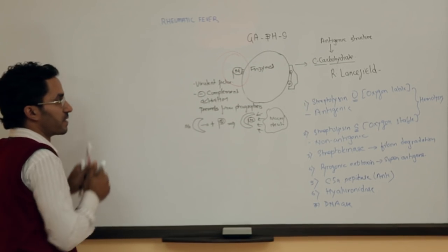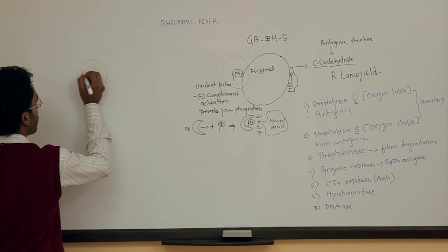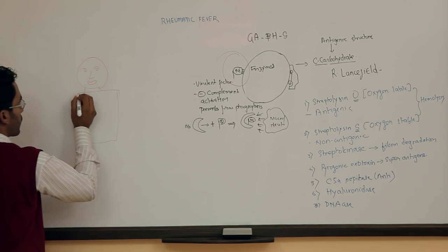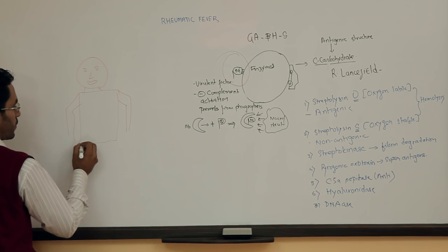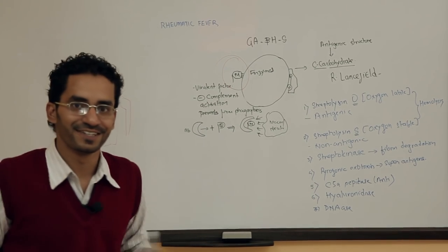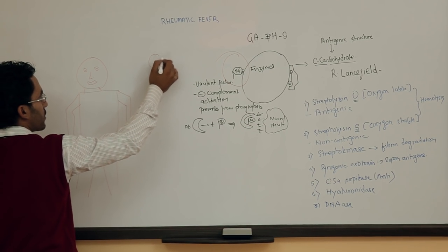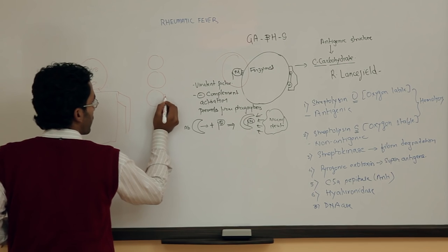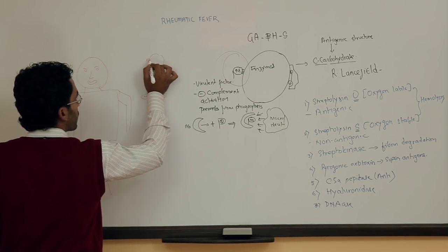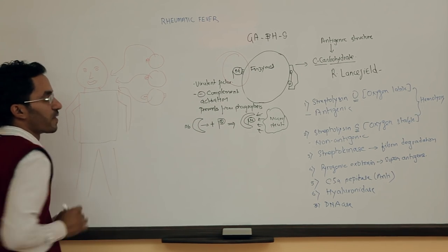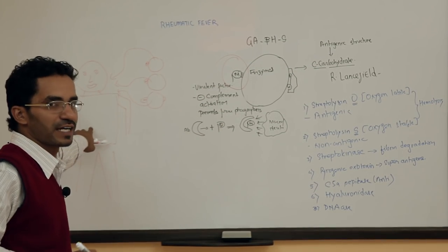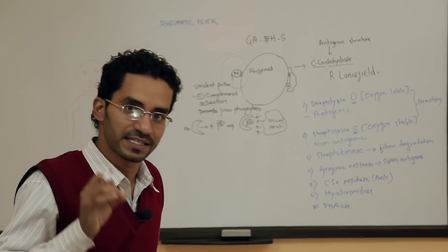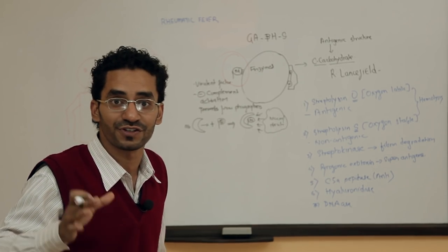In the environment, these streptococci cocci carry M protein and go to attack the human body. The most probable age group affected is 5 to 15 years, as we have studied that rheumatic fever is more common in this age group. The organism goes to the pharynx and causes pharyngitis.